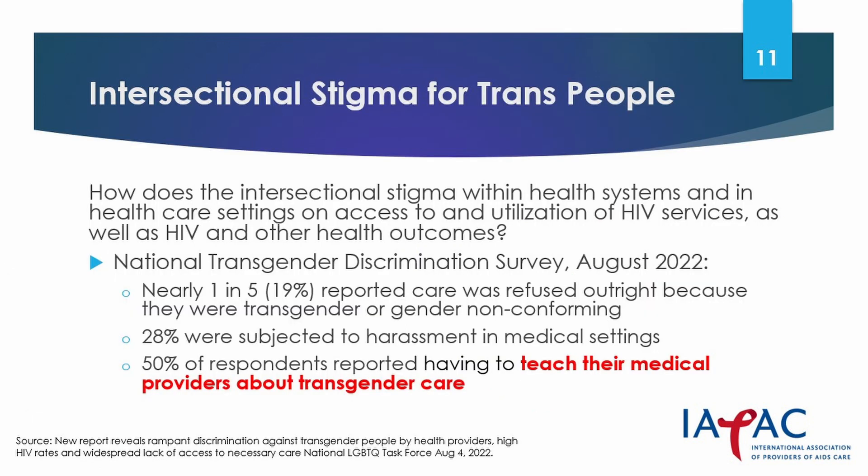The National Transgender Discrimination Survey, a joint partnership between the National Gay and Lesbian Task Force and the National Centre for Gender Equality, was the largest survey of transgender discrimination undertaken. The survey included 6,450 respondents from all 50 states and several territories. Nearly 1 in 5 respondents reported being refused care because they were transgender or gender non-conforming. 28% of respondents were subject to harassment in medical settings. 50% of the sample reported having to actually teach their care providers about transgender care.